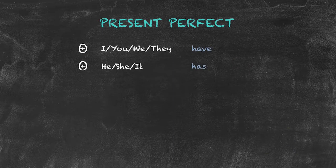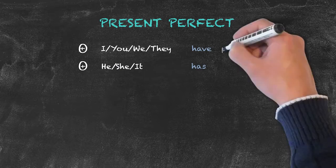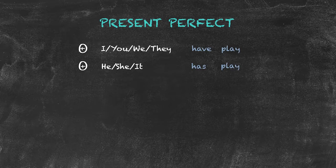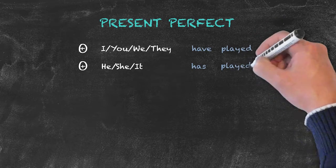Following these helping verbs, we have our main verb in the past participle form. Here, we have the verb to play. To play is a regular verb, so for regular verbs, we simply add ed.